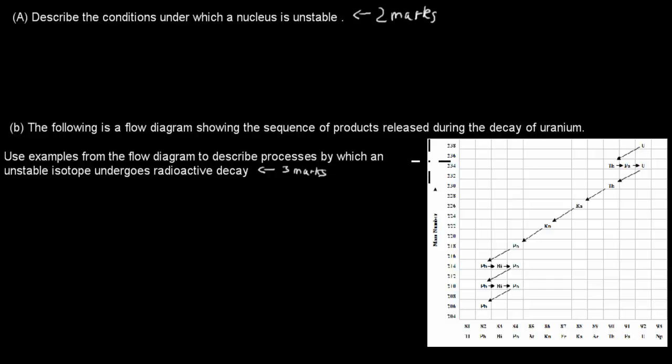Once you've paused the video, try to attempt the question, and when you're ready just press play, and I'll go over the answer. So A is describe the conditions under which a nucleus is unstable, and that's worth two marks. And B is the following is a flow diagram showing the sequence of products released during the decay of uranium.